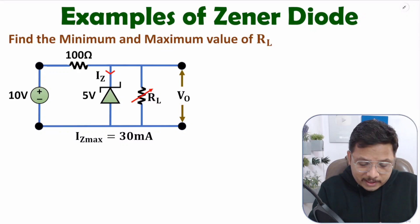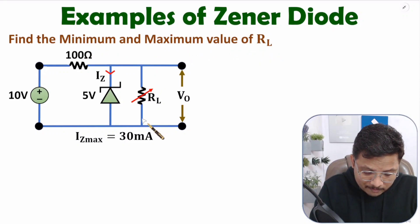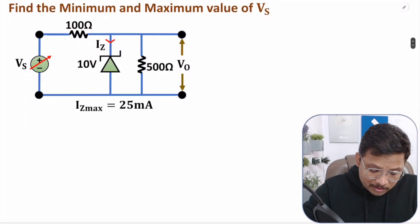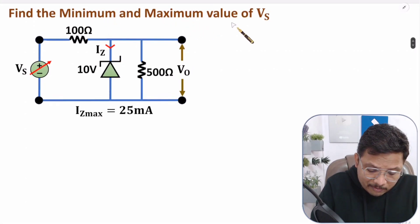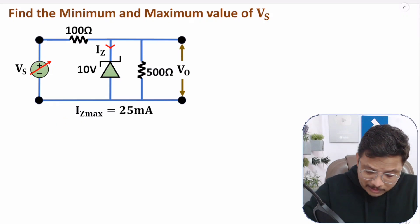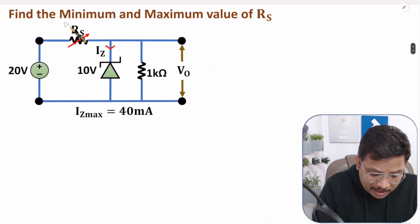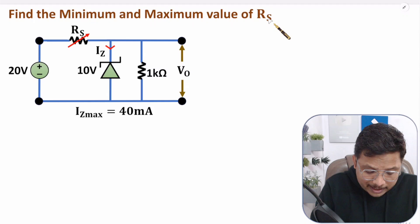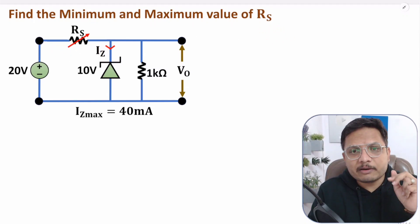In the first question, you'll have to find the minimum and maximum value of load resistance RL. In the second question, you'll have to find the minimum and maximum value of Vs, the source voltage. And in the third question, you'll have to find the minimum and maximum value of Rs, that is the series resistance.